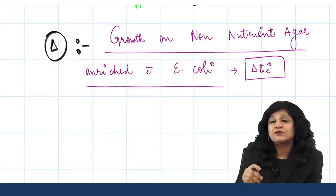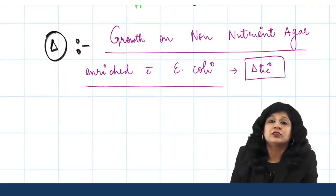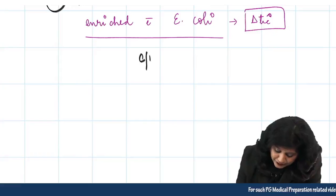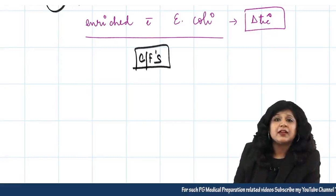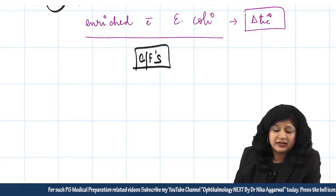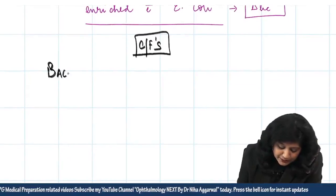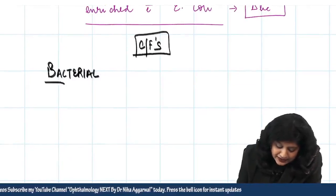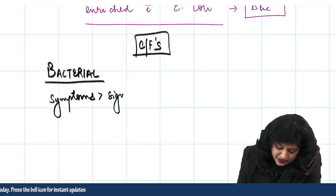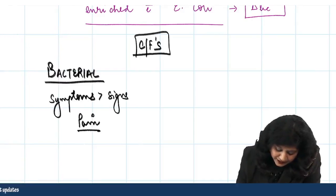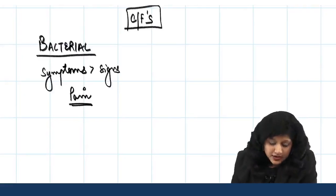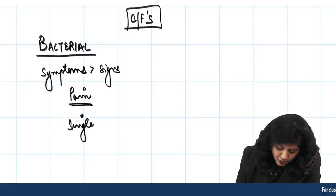Now let us compare clinical features across different keratitis types. In bacterial keratitis, symptoms are always much more than the signs. Pain, photophobia, and redness are important presenting complaints. There will be a single ulcer — not multiple ulcers.